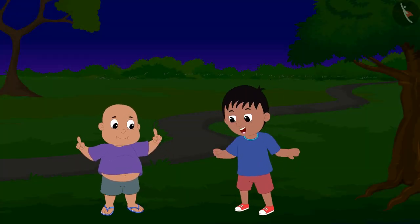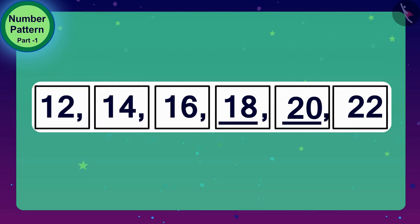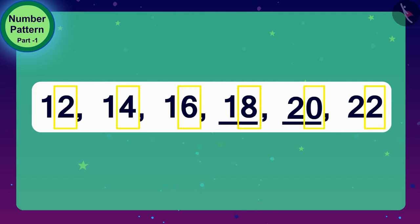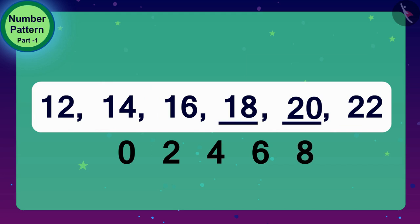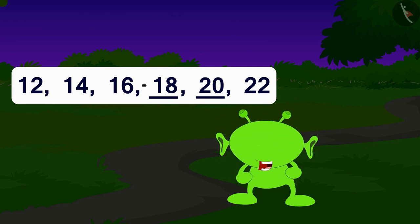Both Raju and Bablu started dancing. Children, do you see one more special thing in these numbers? Here, all the numbers have 0, 2, 4, 6, or 8 at the unit position. Do you know that such numbers which have 0, 2, 4, 6, or 8 numbers at unit's place are called even numbers. Raju and Bablu completed this number pattern using the process of addition. Well done, you two have solved it perfectly.